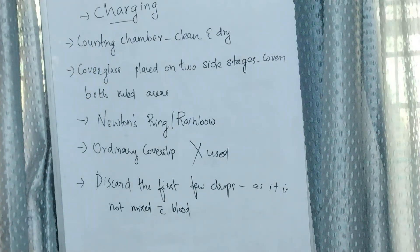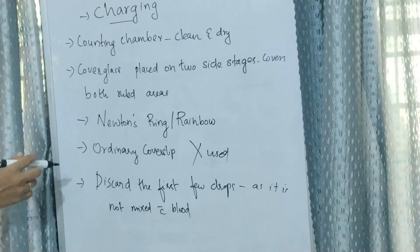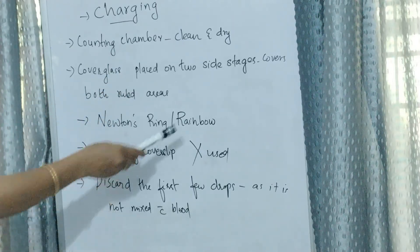Charging: The counting chamber should be clean and dry. The cover glass is placed on the two side stages so it covers both ruled areas.